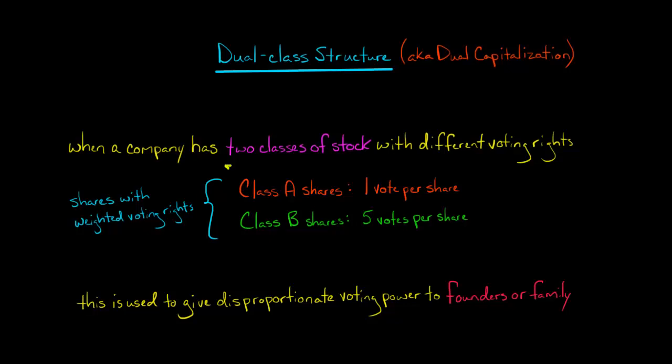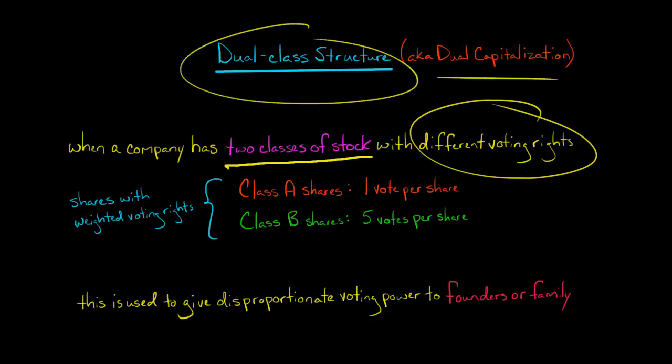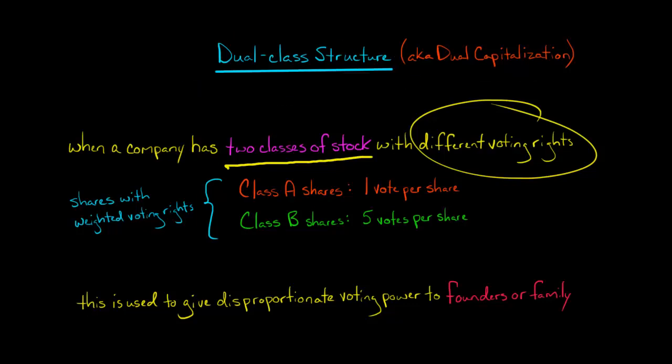Some companies have two different classes of common stock with completely different voting rights. This is called a dual class structure or dual capitalization, and here's how it works.